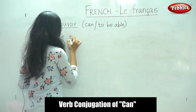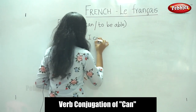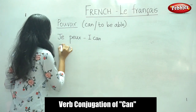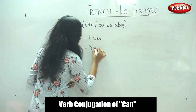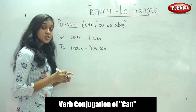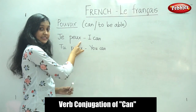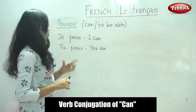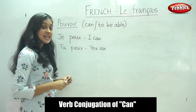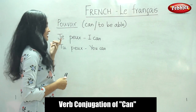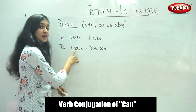Shall we see the conjugation for this verb? For JE, it is conjugated as JE PEUX — it means 'I can.' For TU also, it is TU PEUX — it means 'you can.' Similar to the VOULOIR conjugation, the X here is silent. Do you remember? For VOULOIR it was JE VEUX — V-E-U-X — where the X was also silent, pronounced as VEUX. Similarly, for JE it is JE PEUX, and for TU it is TU PEUX.